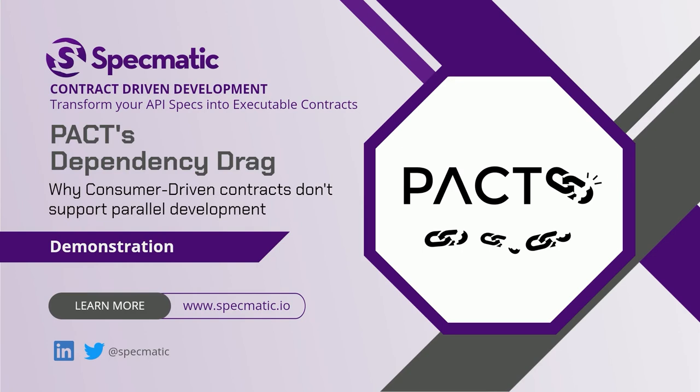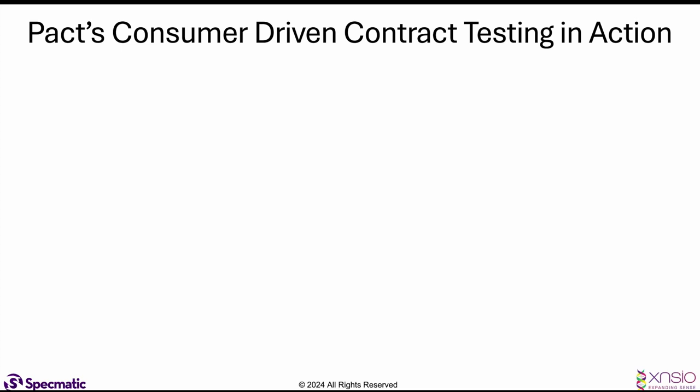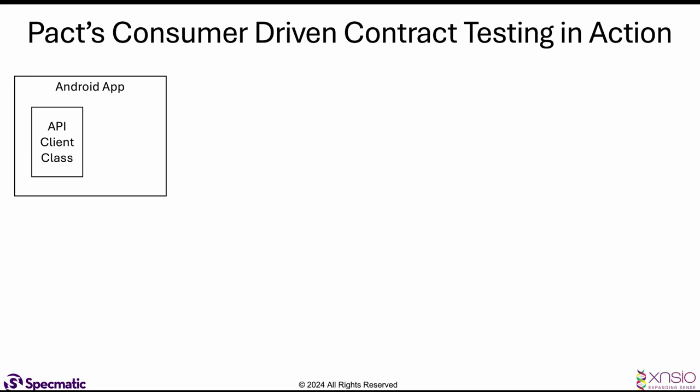Here's what we learned using PACT for contract testing. PACT is a code-first consumer-driven contract testing tool. For example, if I'm building an Android application, I have an API client class which invokes the API provider — in this case a backend-for-frontend service. As the name suggests, this is a code-first approach, which means I need to write the code and also write the unit tests for the API client class.